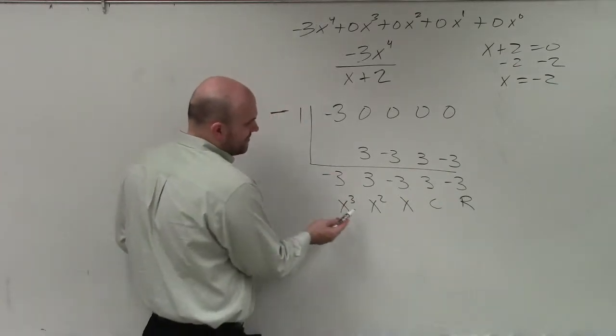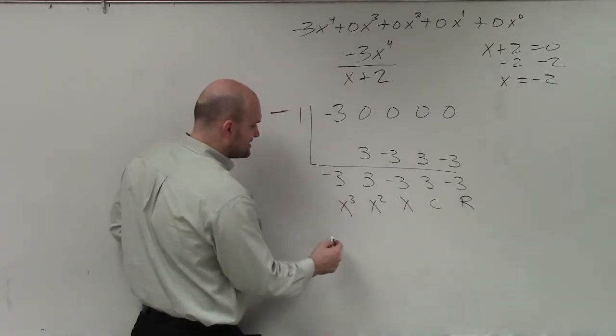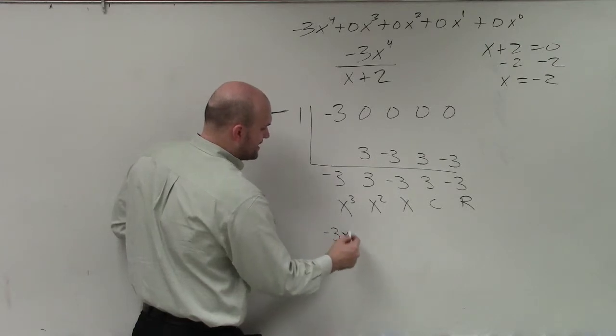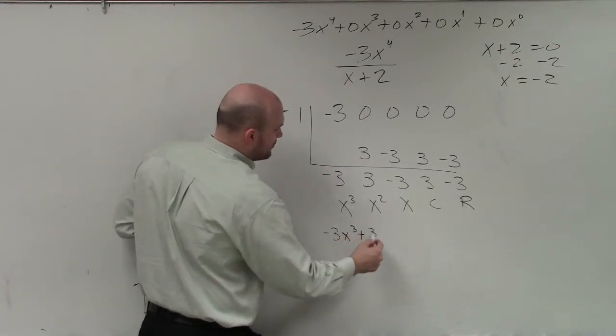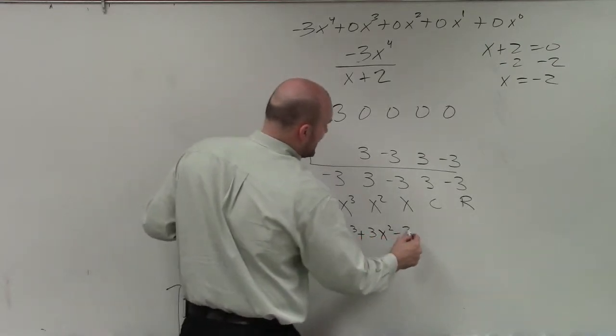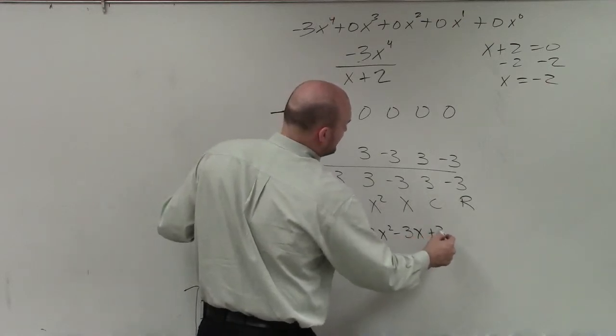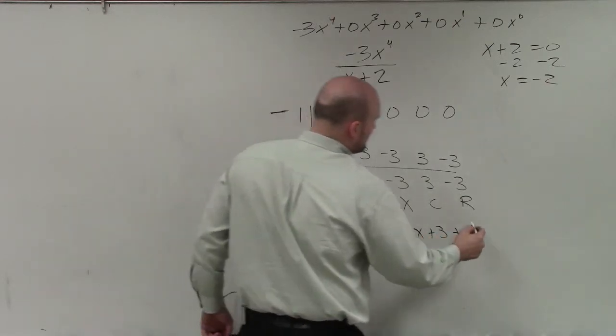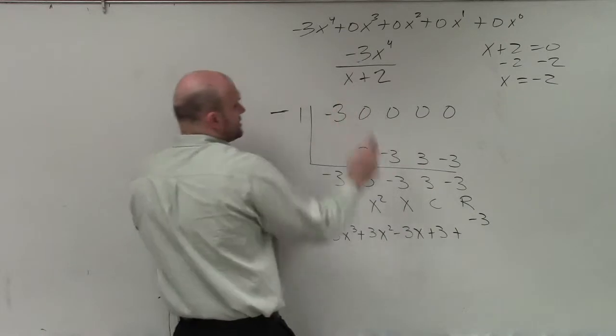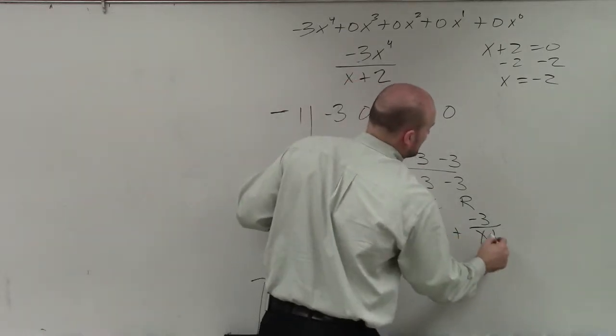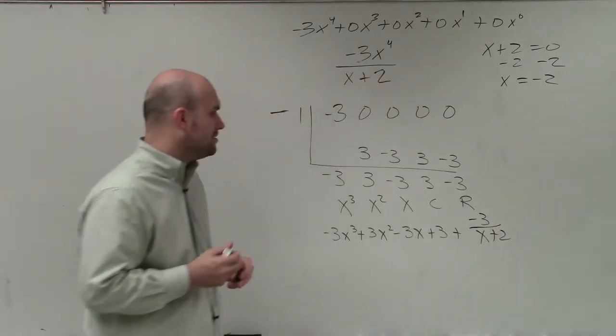So to write this out, I'm going to write -3x^3 + 3x^2 - 3x + 3 plus my remainder. And I always take my remainder and divide it by our divisor.